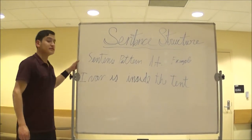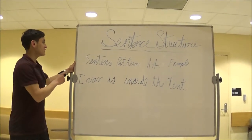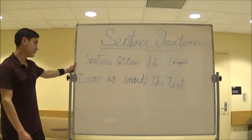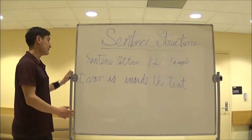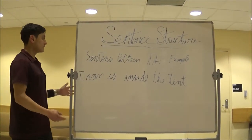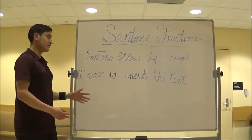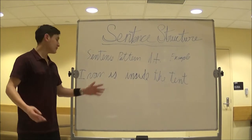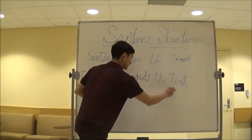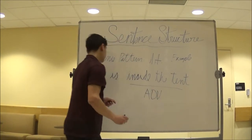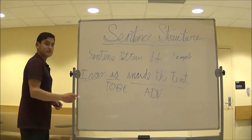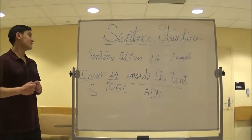Today we're going to cover sentence structures. The first one is sentence pattern 1a. The example is: Ivan is inside the tent. We first identify the verb 'is' — it's a to-be verb. Anytime you have a to-be verb, it's sentence pattern 1a. Inside the tent represents an adverbium because it answers the question where — where is Ivan? He is inside the tent. We underline inside the tent as the adverbium, 'is' is the to-be verb, and Ivan is the subject. That covers sentence pattern 1a.